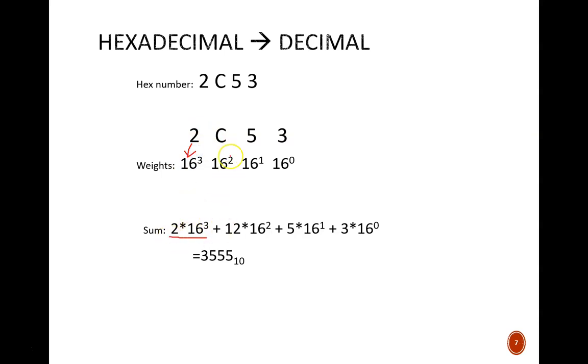And now I just multiply the given number by its weight. So you see 2 times 16 to the 3rd. C times 16 squared. Since I'm going to plug this into my calculator in decimal, I've written C as 12. 5 times 16 to the 1 power. And then finally 3 times 16 to the 0 power. After plugging all that into my calculator, I end up with decimal 3,555.